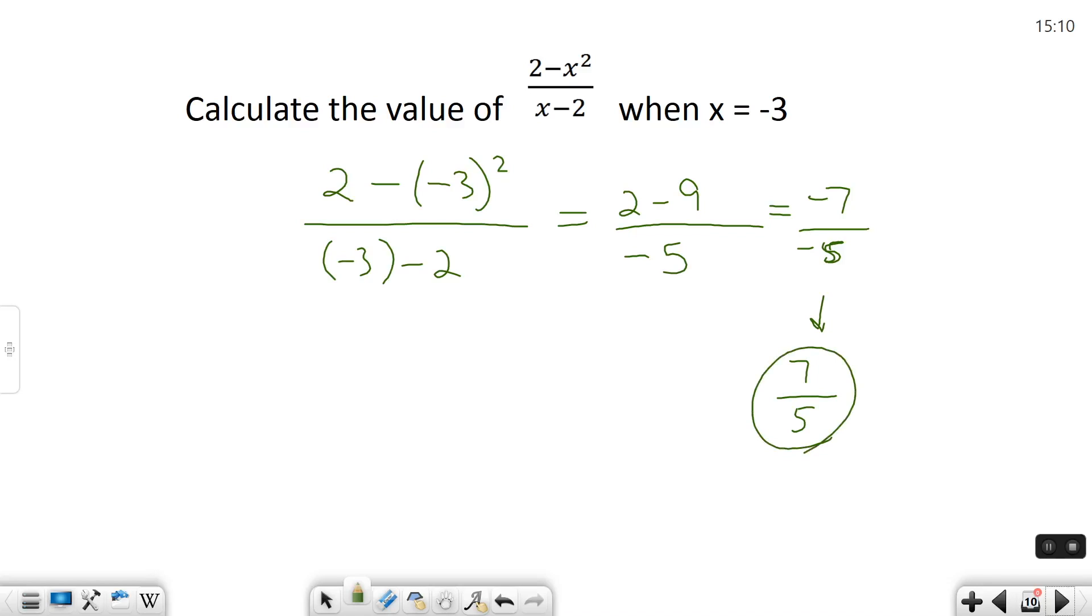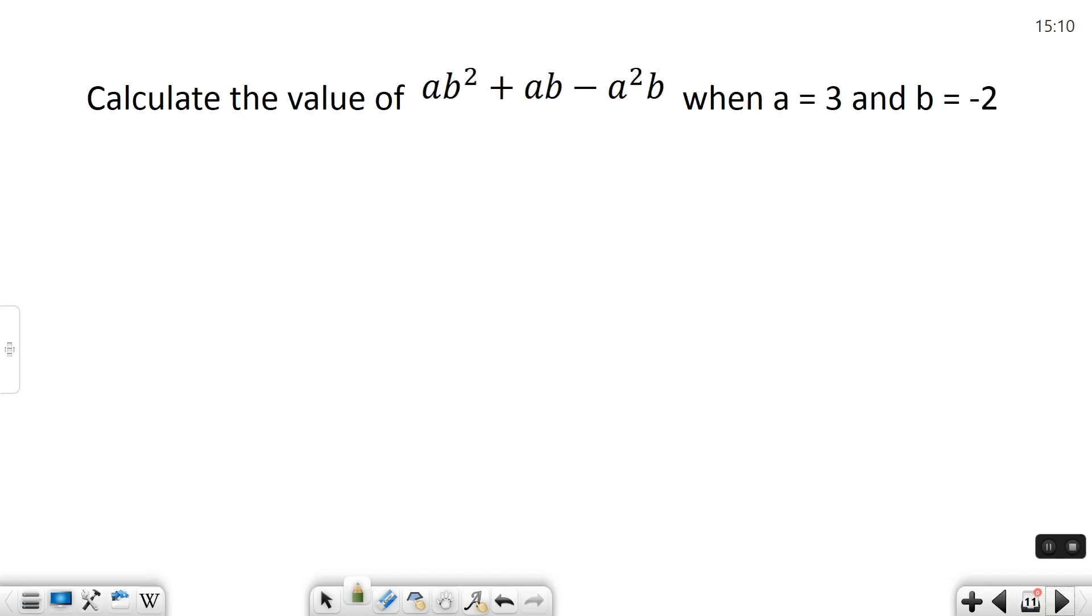Let's try one more example with two variables. Calculate the value of this expression when a is 3 and b is negative 2. I'm going to go through the same procedure. I'm going to use parentheses to plug in these values for a and b, and use order of operations to figure out what it is.